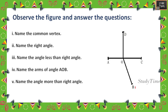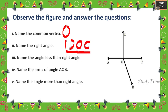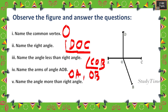Observe the figure and answer the questions. The common vertex is O. The right angle is angle DOC. The angle less than a right angle is angle COB. The arms of angle AOB are OA and OB. The angle more than a right angle is angle AOB, which is greater than 90 degrees.